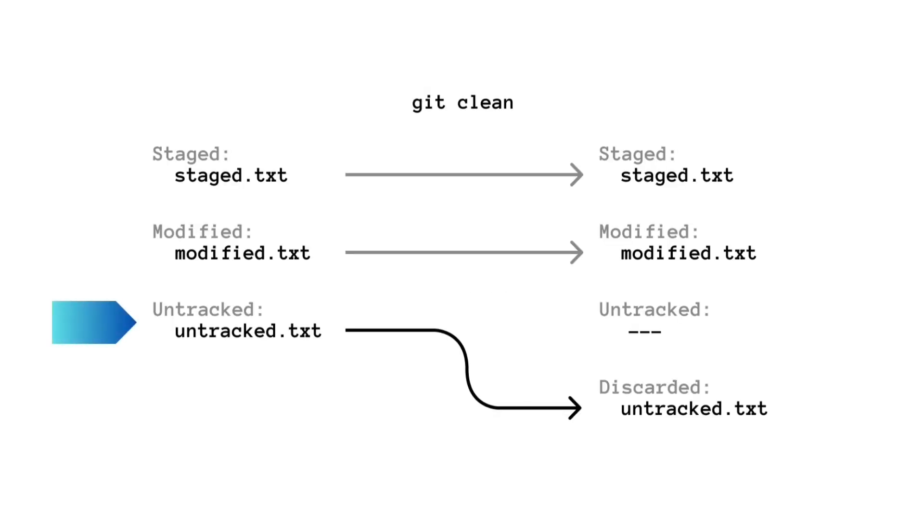Git clean. This command is used to remove untracked files. If you've just created files and they're not tracked yet, you can use git clean to remove them. Be careful, because this command will remove them permanently. So before running it for real, run it with the -n flag — it will show you which files will be removed. After you check that the list is correct, you can run the command again with the -f flag, which will actually remove the untracked files.